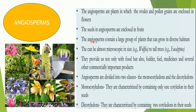Angiosperms are the advanced or complex plant group and are found in almost all habitats. They have very high economic value, right from being used as a source of our food, they are also having economic importance. Now these angiosperms are further classified into two groups: the monocots and the dicots.